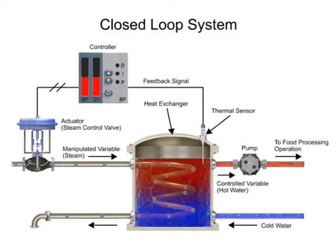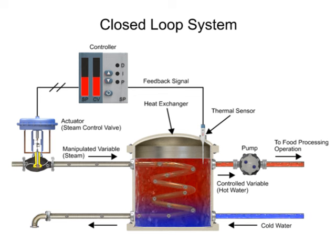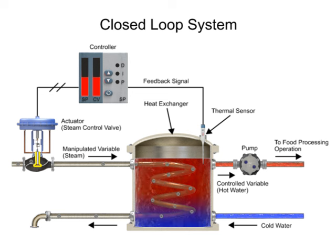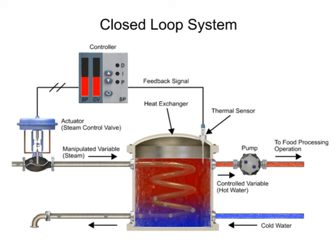The heat exchanger supplies heated water to a food processing operation. Cold water enters the bottom of the vessel where the water temperature rises as it passes through steam-heated coils before flowing out of the pump at the top.